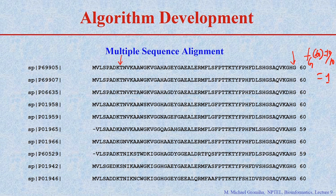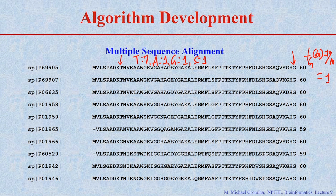If you see, what is the frequency of these amino acid residues at position 9? How many times does T occur? T occurs 7 times. Alanine occurs one time. Glycine occurs one time. Serine occurs one time. Now convert this into frequencies.